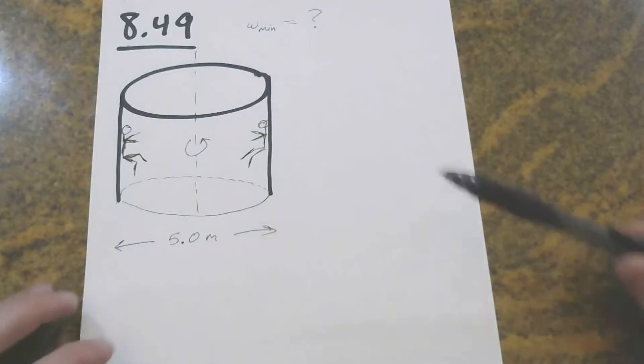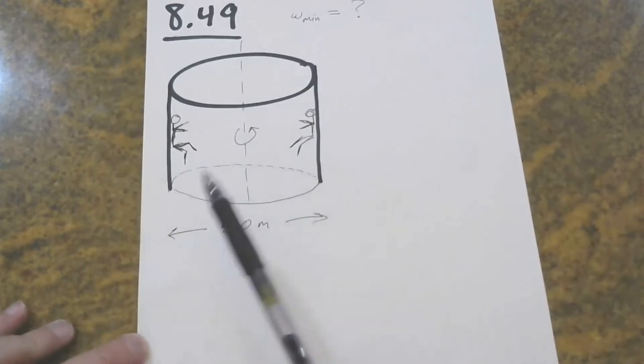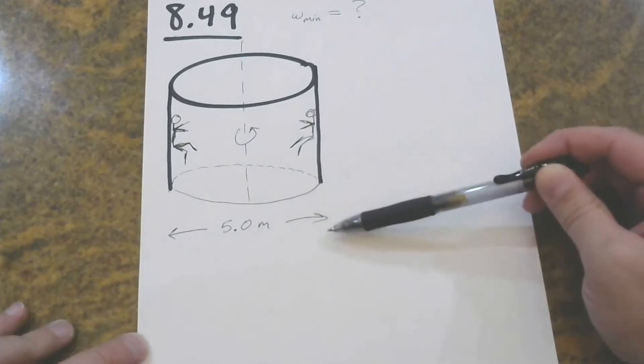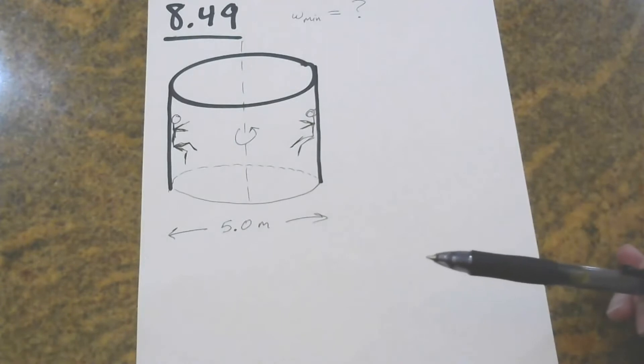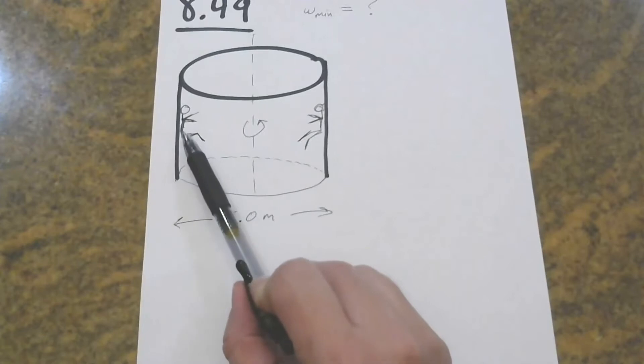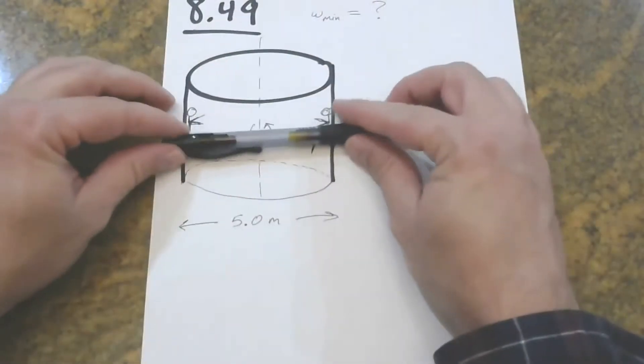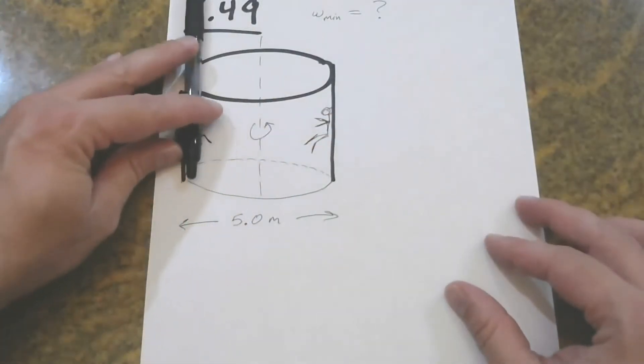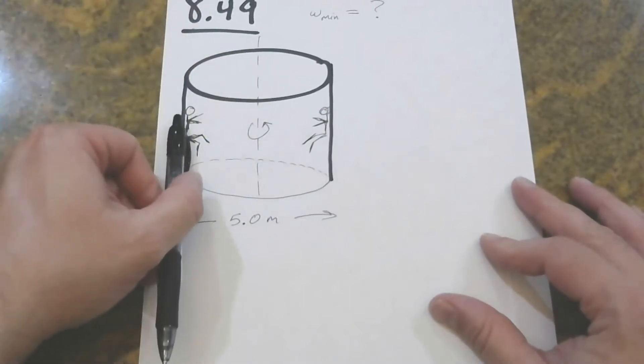This is the one about the classic amusement park ride where you're inside a circular room that's spinning. Eventually, depending on the ride, they may lower the floor beneath you. And because the room is spinning so fast, you develop a significant centripetal force on your body from the contact with the wall. And that force which points towards the center of the room is sufficient to develop enough static friction to support your weight against gravity.